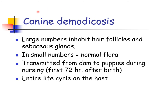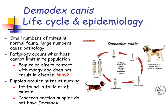Canine demodicosis is also known as red mange or demodectic mange. It occurs when a large number of Demodex canis mites inhabit the hair follicles and sebaceous glands. In small numbers, these mites are part of the normal flora of canine skin and usually cause no clinical disease. The mites are transmitted from the dam to puppies during nursing within the first 72 hours after birth. The mites spend their entire life cycle on the host and the disease is not considered to be contagious. For puppies, the first mites are found in the follicles of the muzzle, and cesarean section puppies do not have demodex.